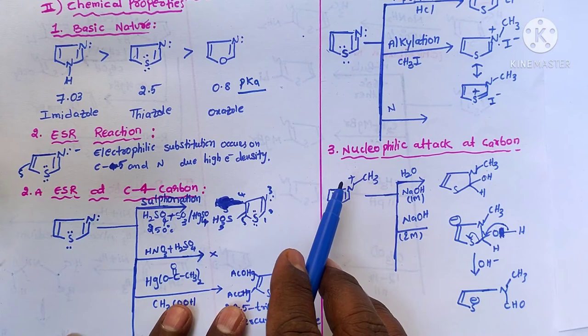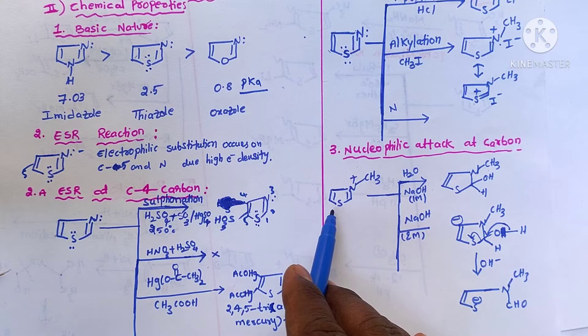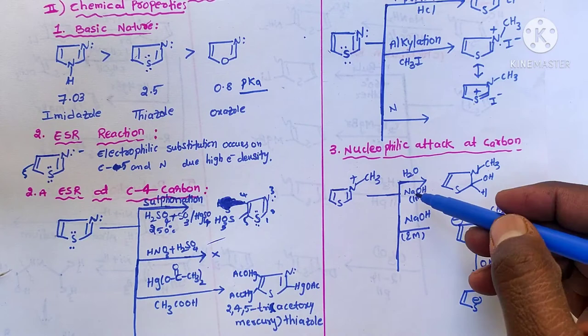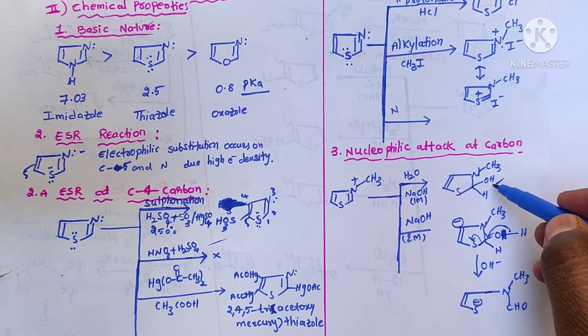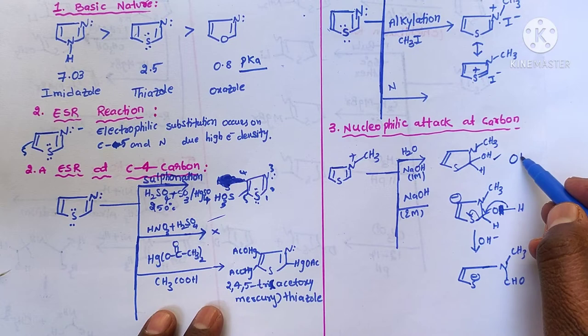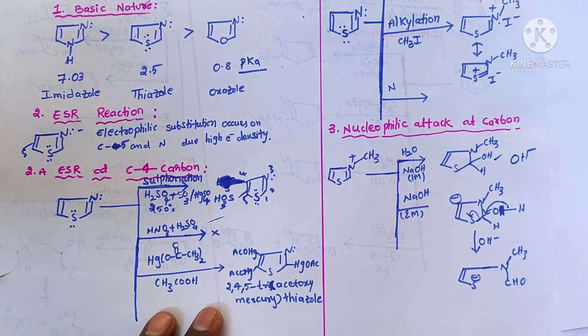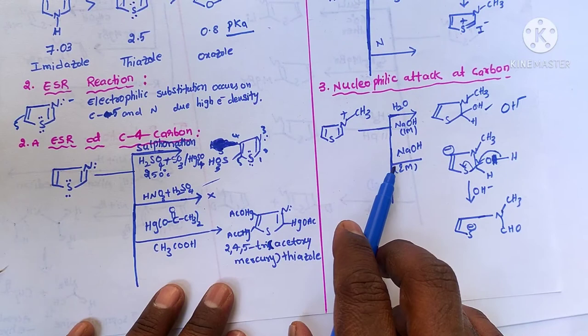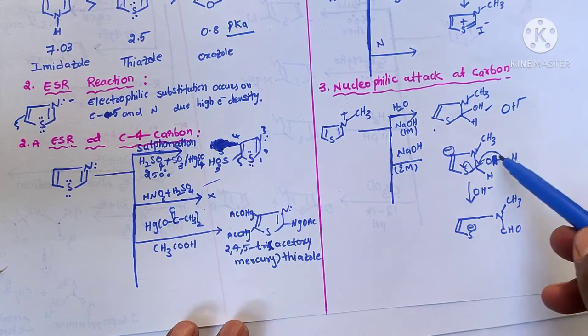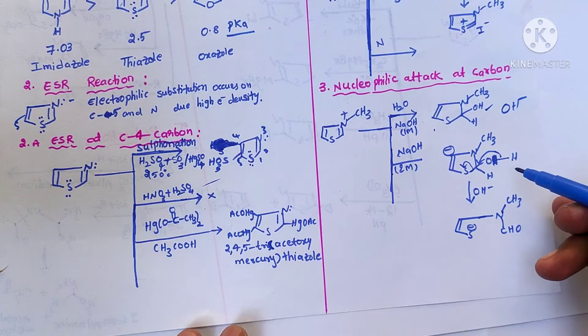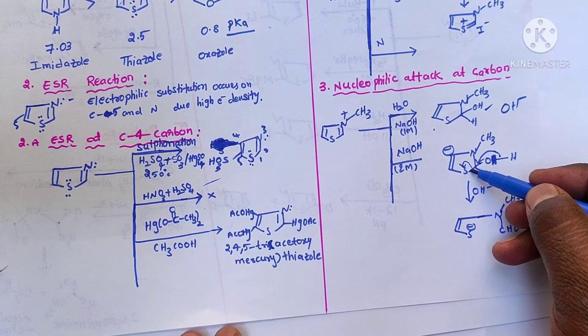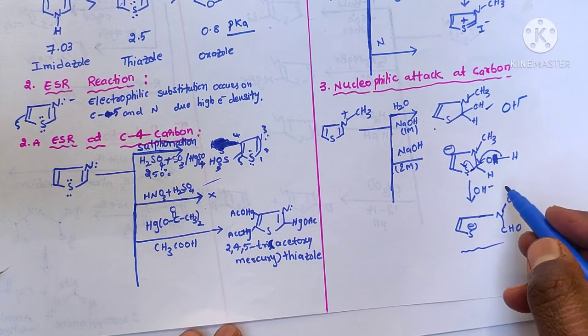Now we go for the nucleophilic substitution reactions. This quaternized thiazole undergoes nucleophilic substitution. For example, when treated with dilute NaOH we get the product where one hydroxy group is substituted — the nucleophile here is OH minus. When treated with two moles of NaOH, first we get an intermediate product, then ring opening takes place: one bond breaks, the electron pair shifts here, this bond fails and the electron pair shifts onto the sulfur, and we get the ring-opened product.